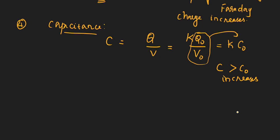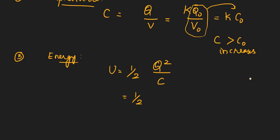Now the last one is energy. Energy here U equals half Q squared divided by C. So here Q is actually KQ0. So Q will be KQ0 whole squared. C will be KC0.